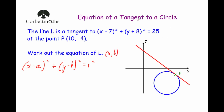Looking at the equation of the circle we've been given, we know that a = 7. For the y-coordinate, it's (y − b) but this is +8, so the centre of the circle is the point (7, −8). So the centre C is the point (7, −8).